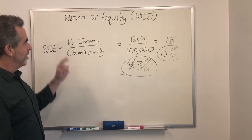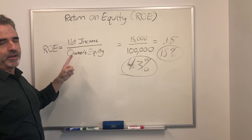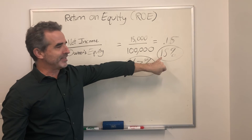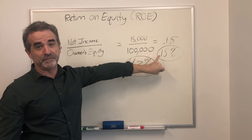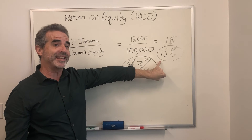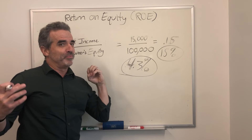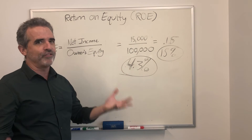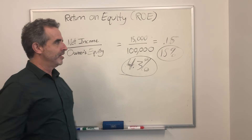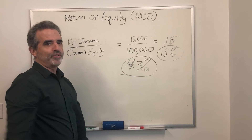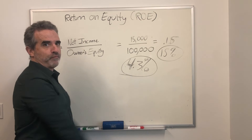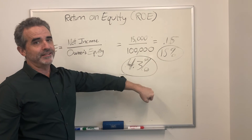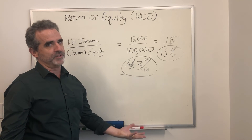So again, Return on Equity: net income divided by owner's equity gives you the ratio. You want to see a return on equity of at least between 15% and 20%, because if you're really putting everything on the line in an inherently risky business, you want a nice rate of return. If you can put money in a treasury and get 4.3%, and this number is similar or less, you have to question whether the operation is being run efficiently.